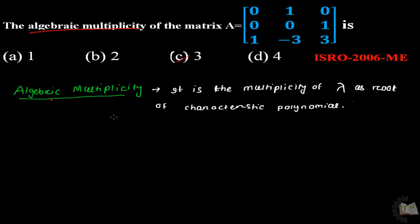Algebraic multiplicity is the multiplicity of lambda as a root of the characteristic polynomial. Lambda is nothing but an eigenvalue.